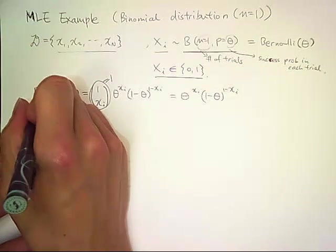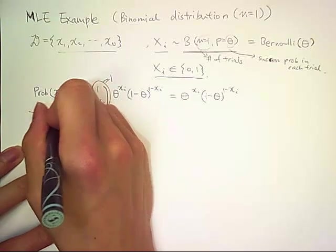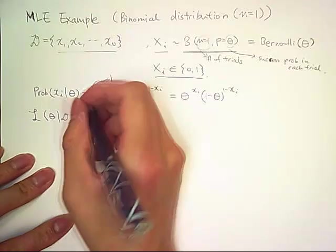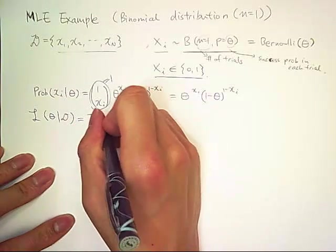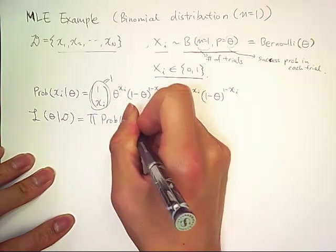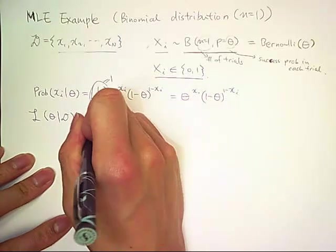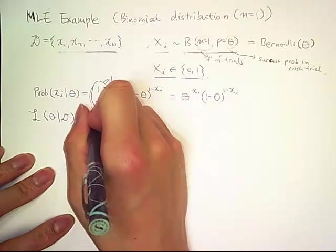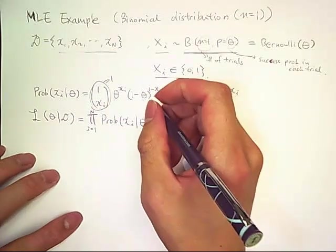Now we can define the likelihood function of theta given d and is a product of the probability function x sub i given theta from i equals 1 to n.